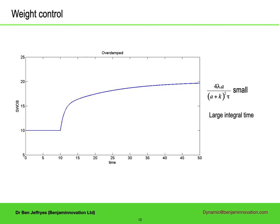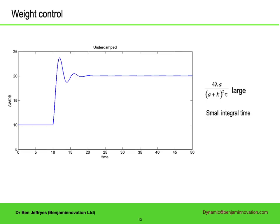For a short drill string, or one with a very large integral time, there will be exponential convergence. If you decide to double the weight on bit, the convergence will look like a smooth curve — the numbers on the scales are arbitrary but indicative of time in seconds and weight in thousand pounds force. If you take the same drill string and reduce the integral time, the system becomes oscillatory. If the desired weight is doubled, the weight overshoots and oscillates. If the integral time were reduced further, the system would converge at the same time but the oscillations would increase in amplitude.